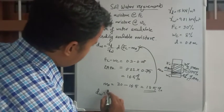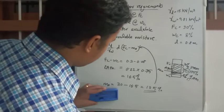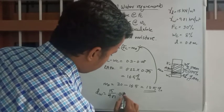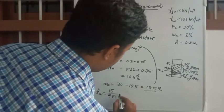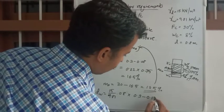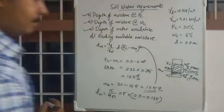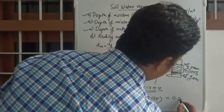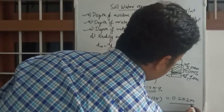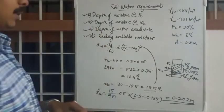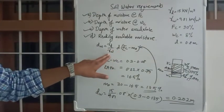Now substitute M0 into the equation: dw = (15 / 9.81) × 0.8 × (0.30 − 0.135). The answer is 0.202 meters — that is the readily available moisture.